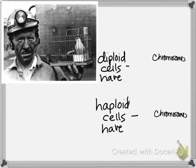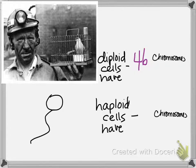This is the first human I could find in my photo roll. Humans have 46 chromosomes in every body cell. So this Welsh miner, who is producing sperm cells — based on secondary sexual characteristics — would have how many chromosomes in those sperm? 23.